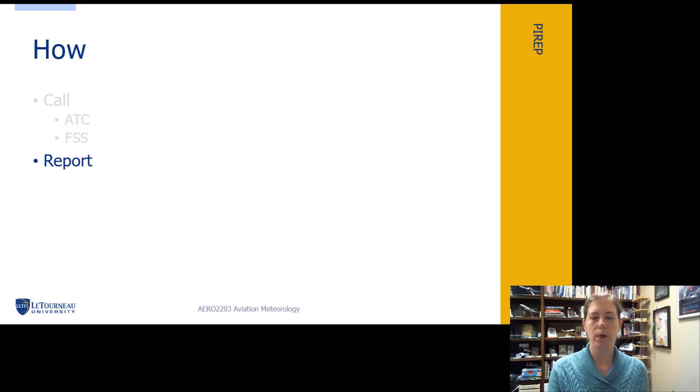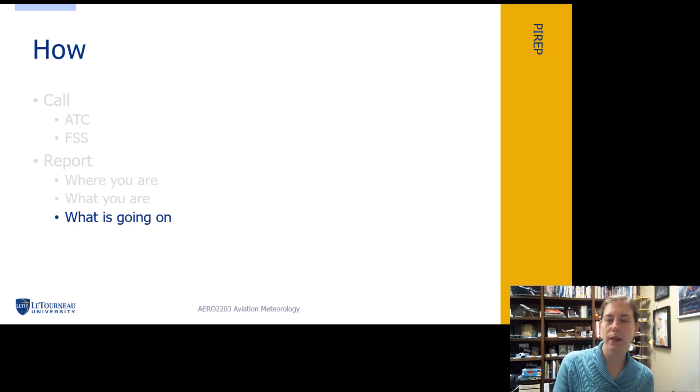What we're going to report when we make the pilot report: where you are, where this phenomenon was observed, because that's really what we care about. If it was 100 miles back, let's tell where it actually happened. So where we were when we saw whatever we saw, what kind of aircraft we are. Obviously our call sign is important, but we also need to know what kind of aircraft we are. We'll get into why in a little bit, and what we are seeing. So what's happening around us, what is being seen that wasn't forecast, what is not being seen that was forecast.